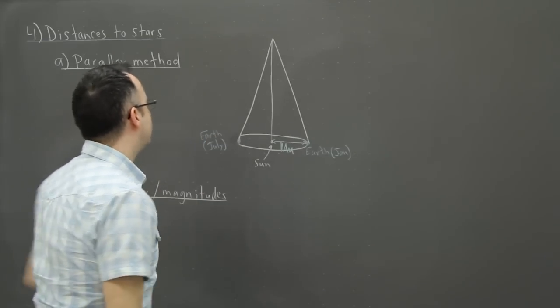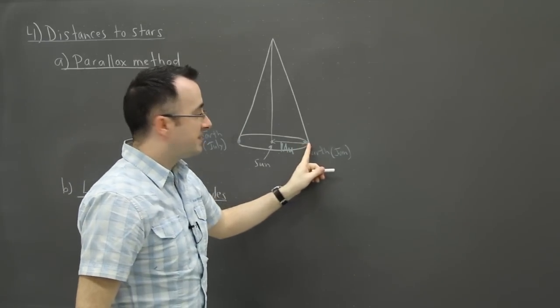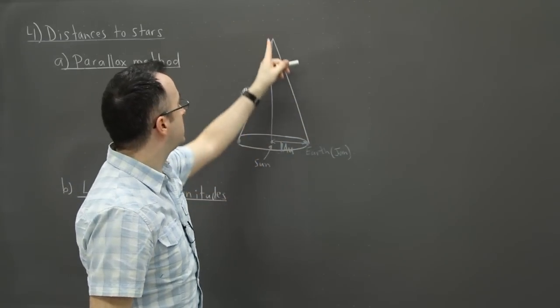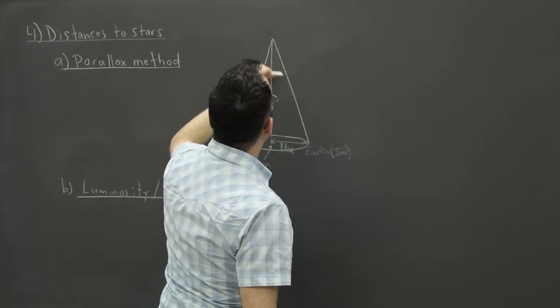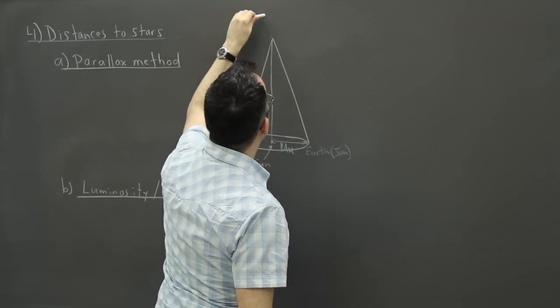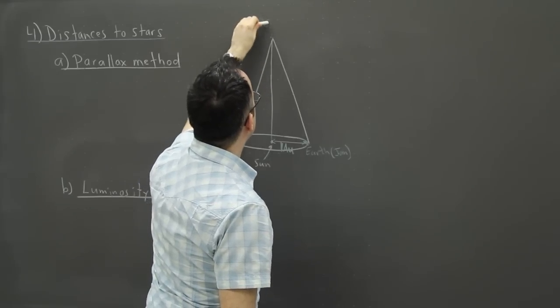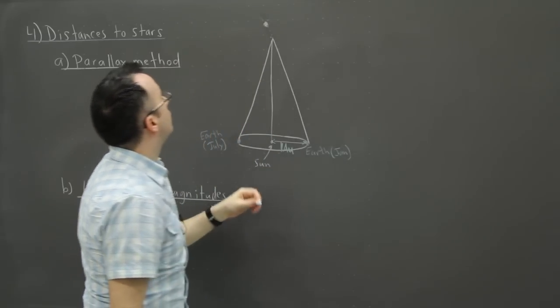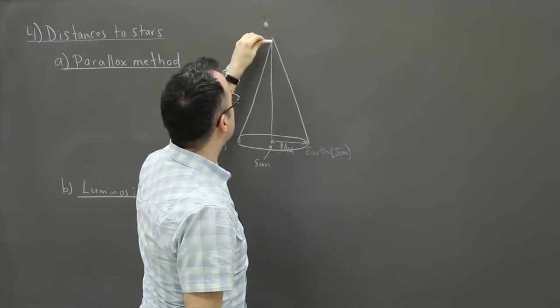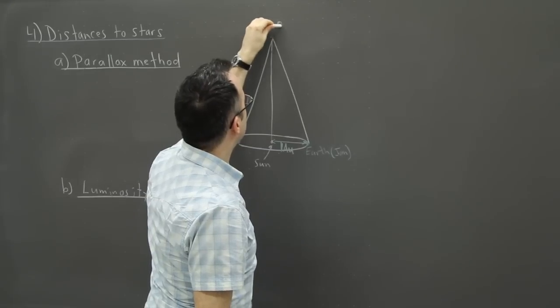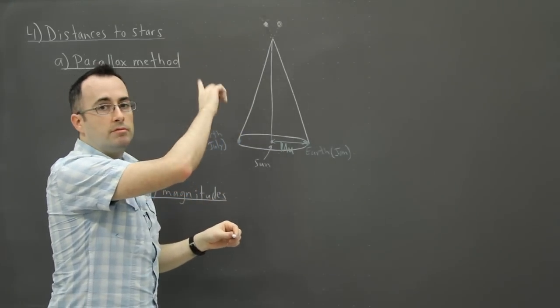On Earth in January, we look up at this star and it appears that the star is here. Whereas six months later, the star appears to be here. So you see, the star appears to move compared to all the background stars.